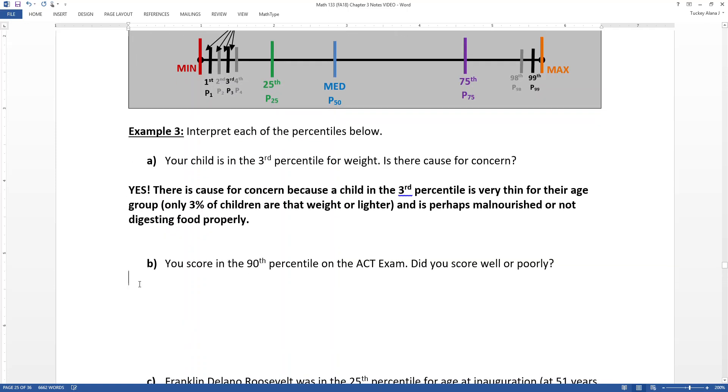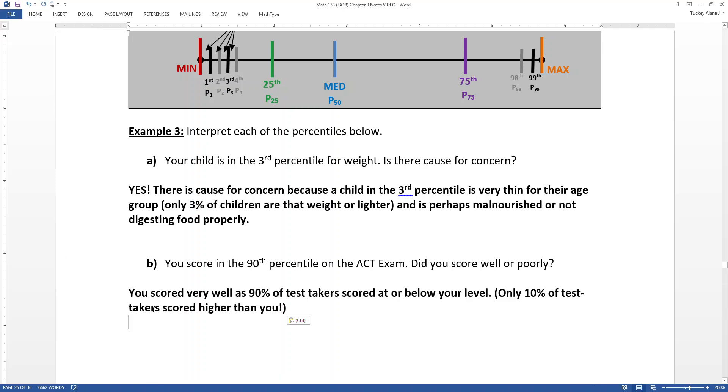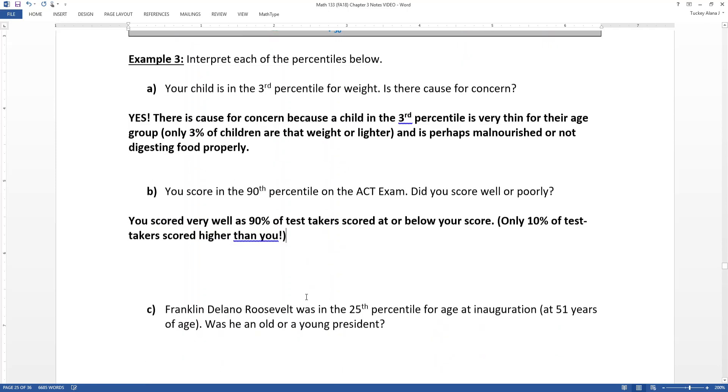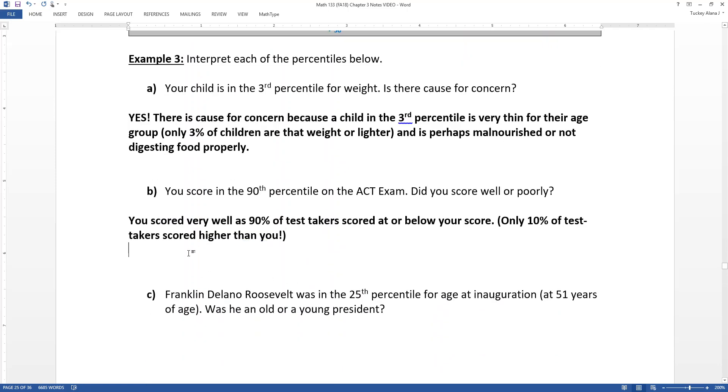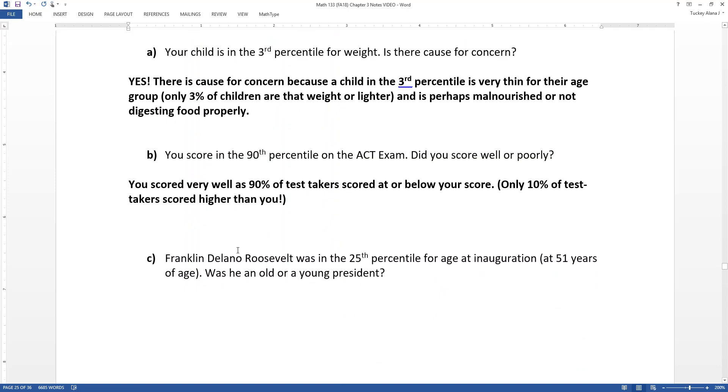Alright. Now, suppose you score in the 90th percentile for the ACT exams, to which you would say, woot, right? That's a really great score. That means that you scored really, really well because you scored better than or equal to 90% of test takers. So let me put it this way: 90% of test takers scored at or below your score. That's great, right? So that means that only 10% scored higher than you, which is wonderful. So start shining up those college applications because that would have been a great score to get on your ACT.